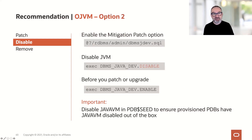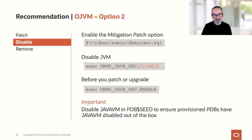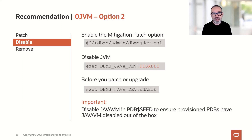How do you enable the mitigation patch? You run a script called dbmsjdev.sql, which brings the mitigation patch functionality into your database. Then, in the second call, you disable the Java subsystem by calling dbmsjdev.disable. When you disable the Java subsystem this way, the security issues no longer affect you — because with the Java subsystem disabled, OJVM security vulnerabilities cannot be exploited.